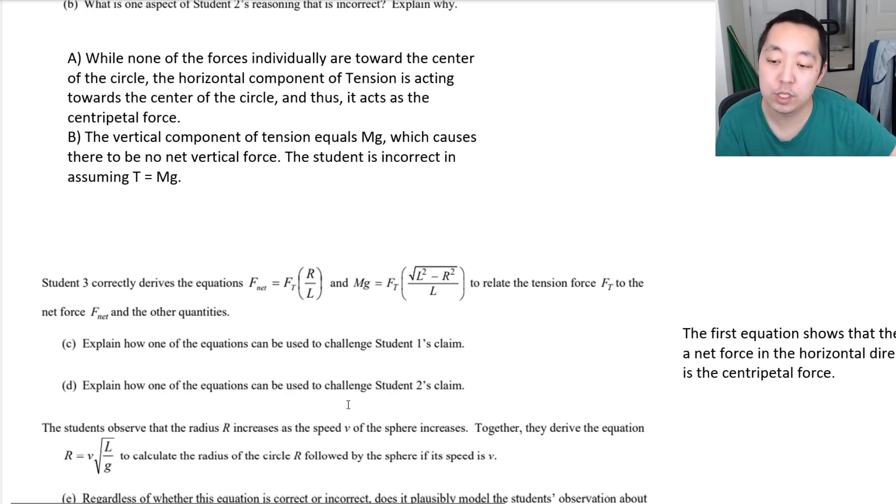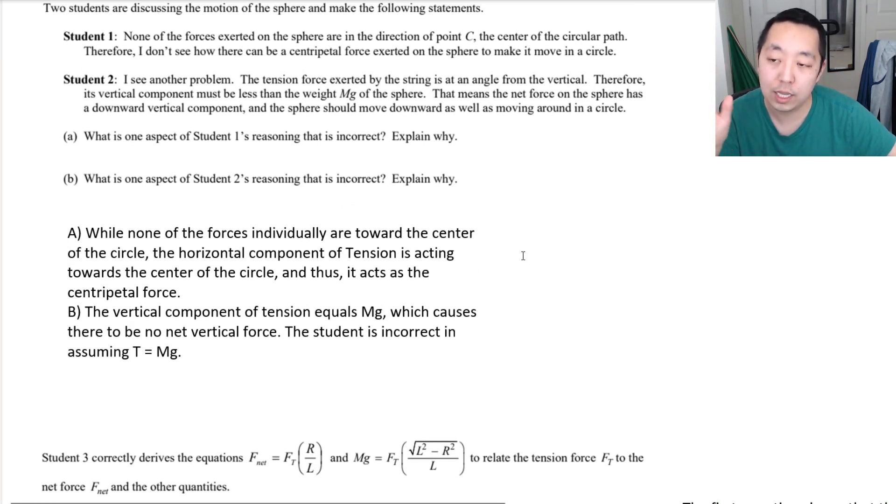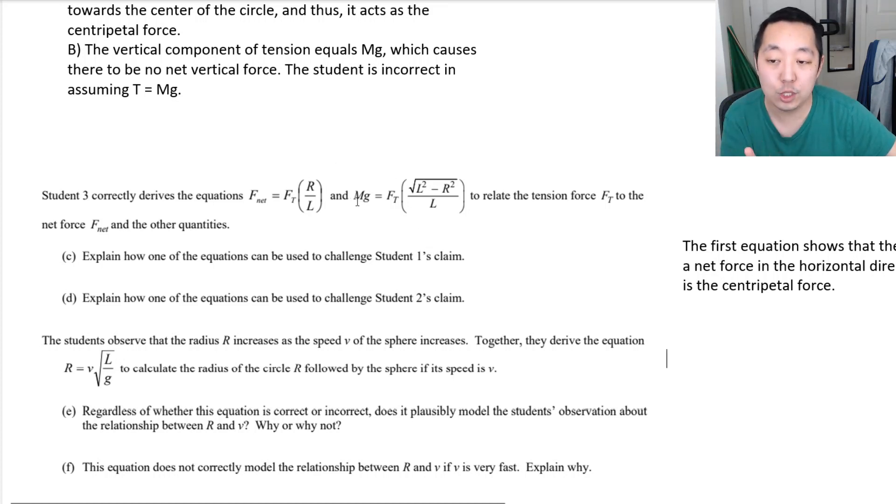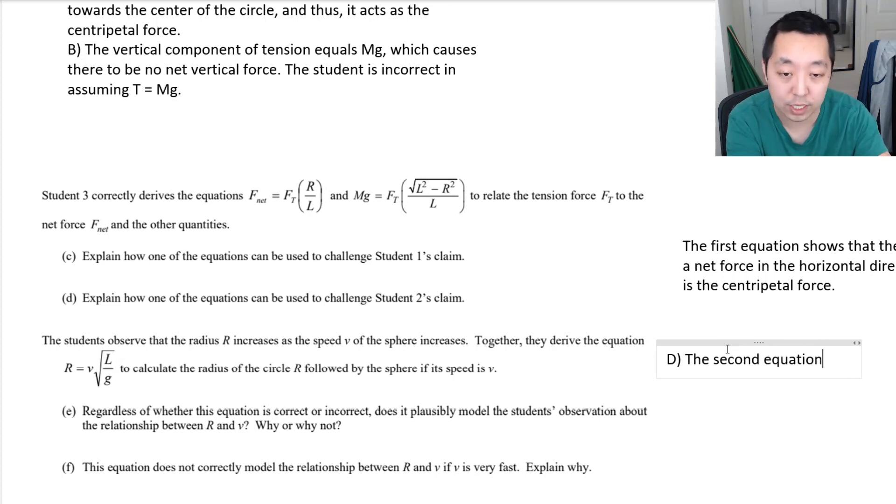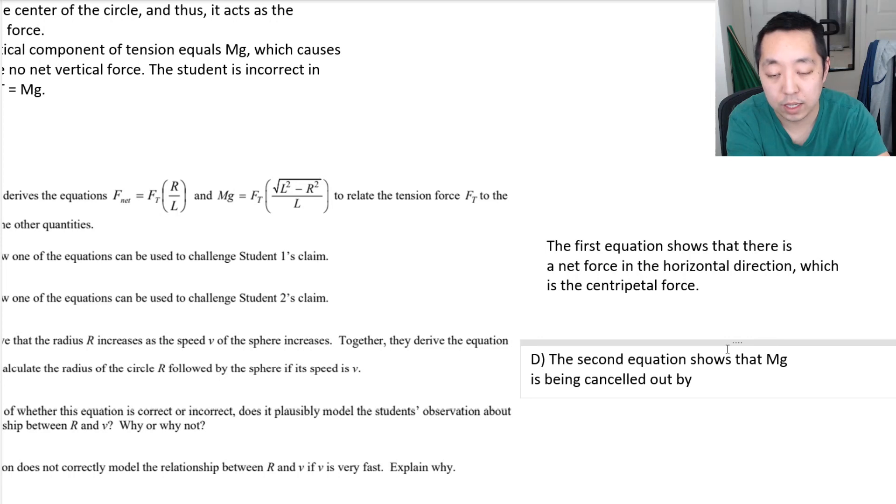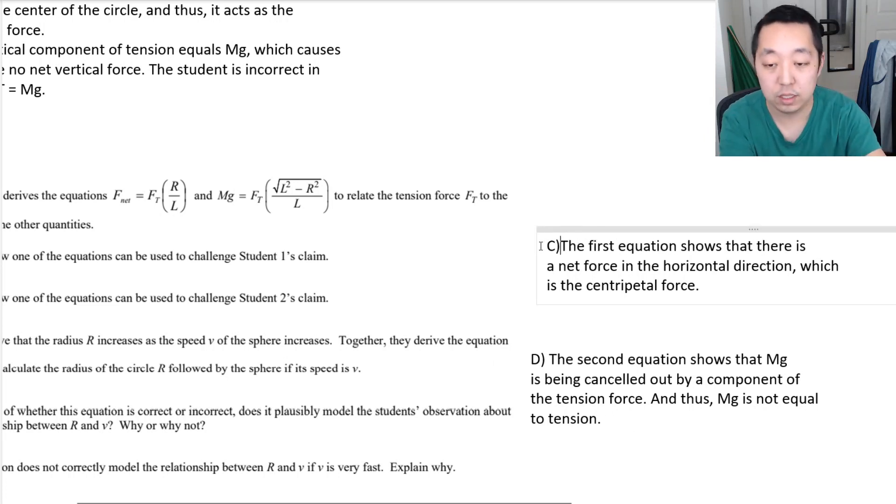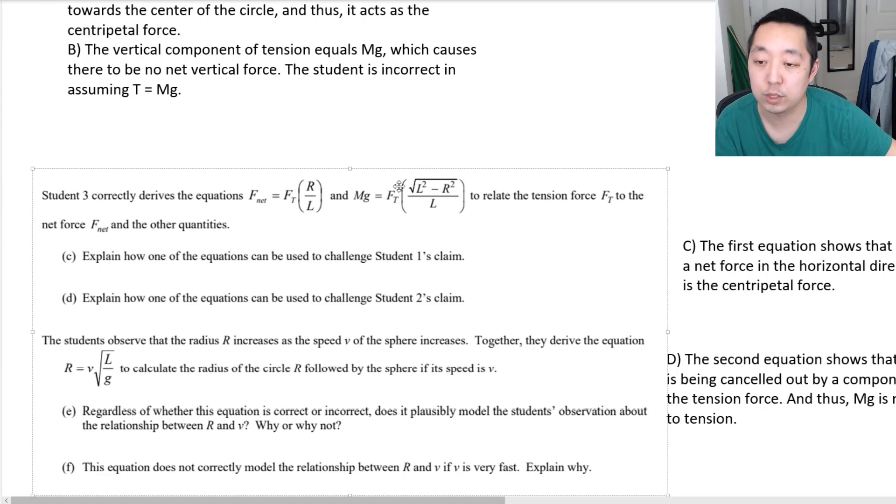Explain how one of the equations can be used to challenge student 2's claim. Student 2's claim is that it has to accelerate downward because the tension has to equal Mg. But really, here we can demonstrate Mg is canceled out by the vertical component of tension. So, for D, I would say the second equation shows that Mg is being canceled out by a component of the tension force. And thus, Mg is not equal to tension. That's all we've got to really explain there, is that the second equation is really demonstrating how the force of gravity is really a fraction of tension force. That's why tension is not equal to Mg.